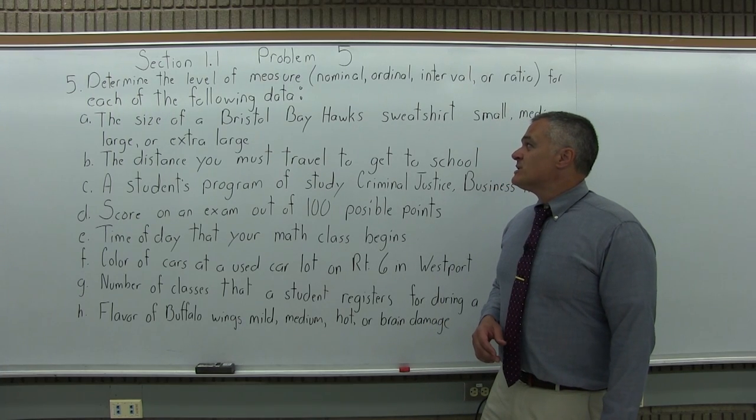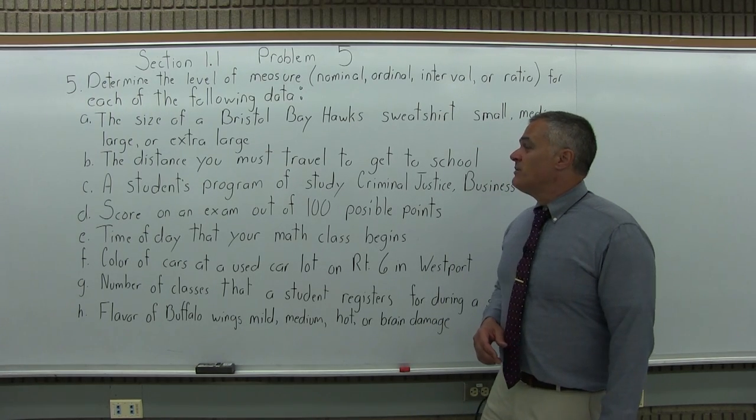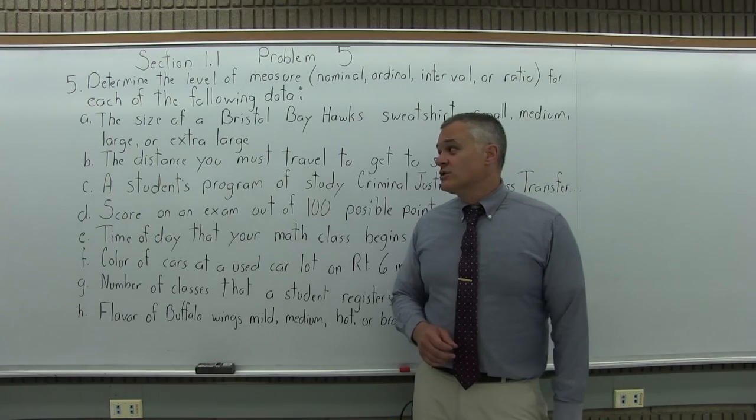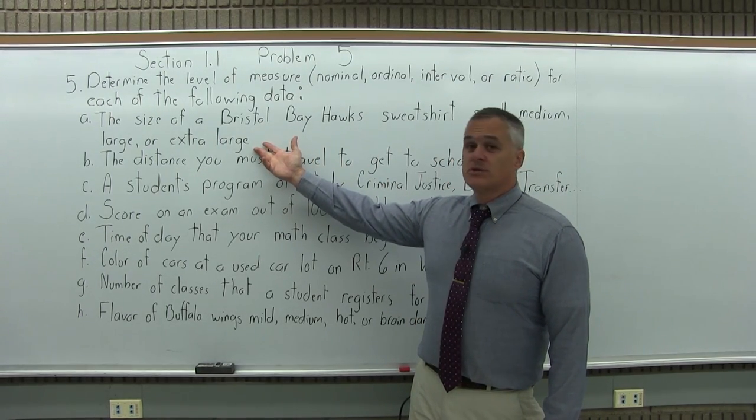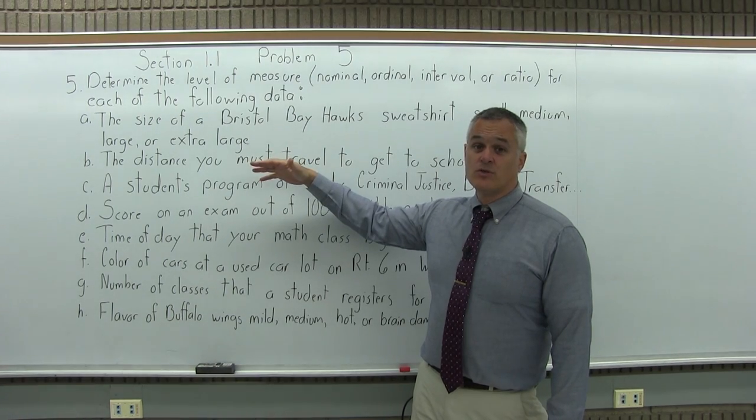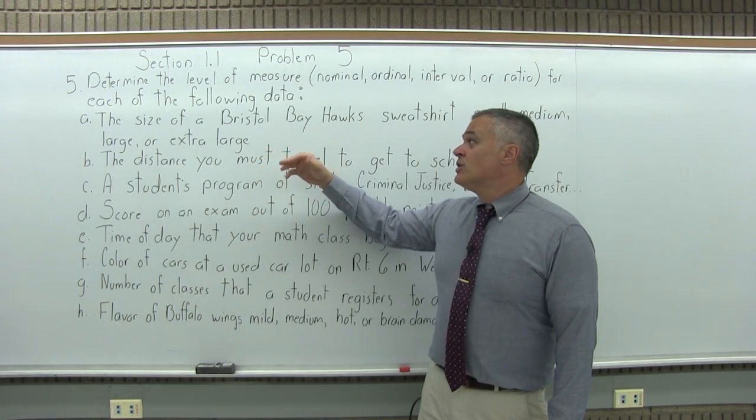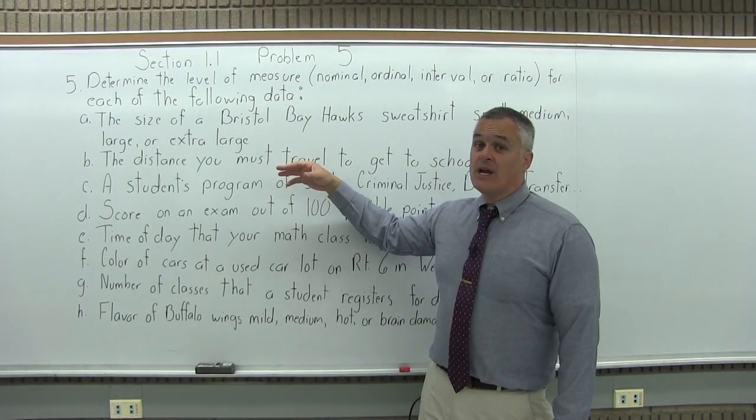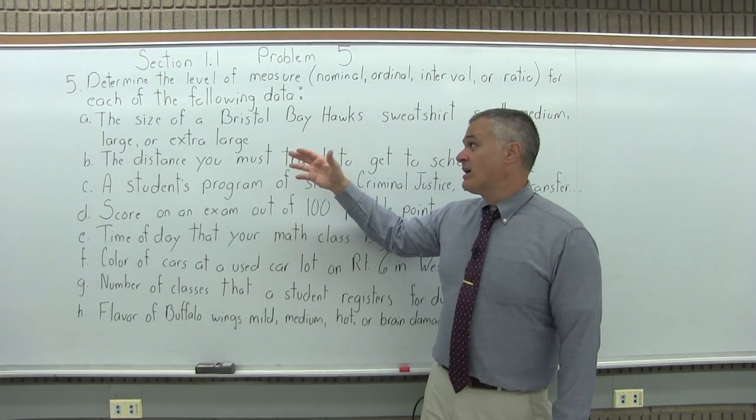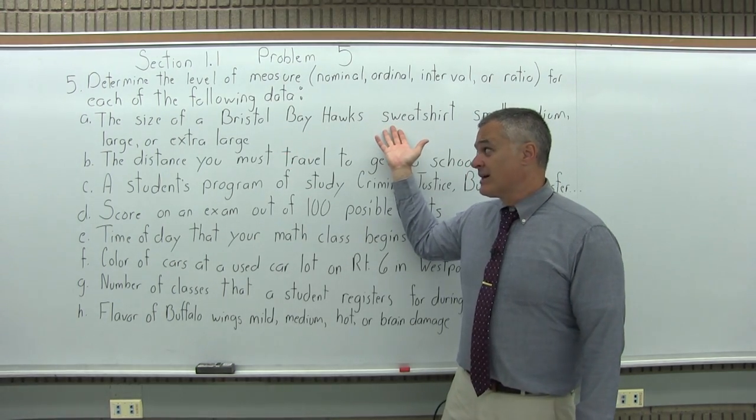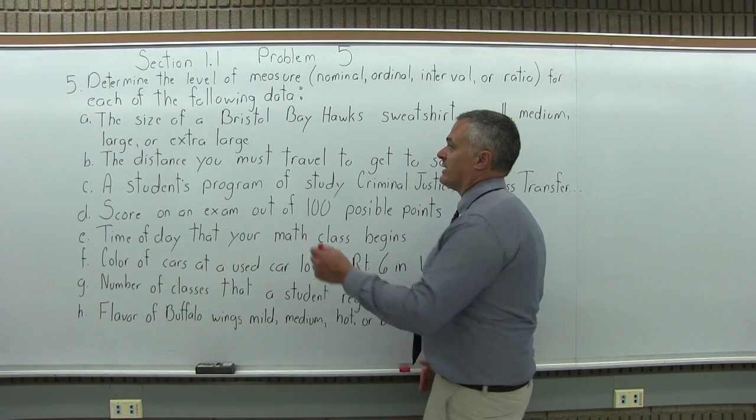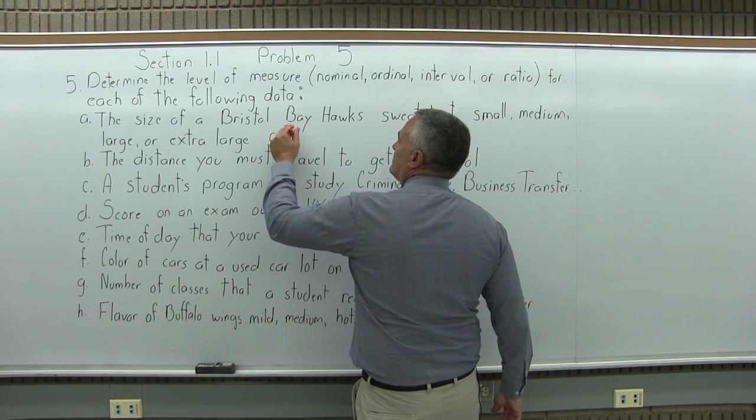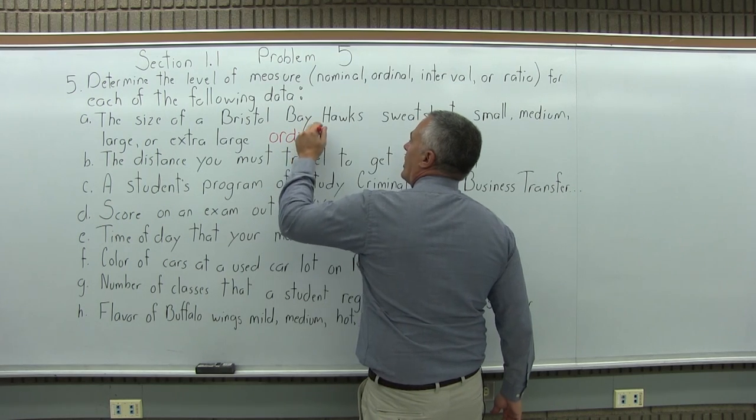So the size of a Bristol Bayhawk sweatshirt: small, medium, large, or extra large. The measure is using words as opposed to numbers, so that's going to put it in the first two, nominal or ordinal. Nominal is name only, no rank. Ordinal is name with an implied rank, and there is certainly an implied rank to this, small being the smallest and they get progressively bigger, they are ranked. So this would be ordinal, names with an implied order.